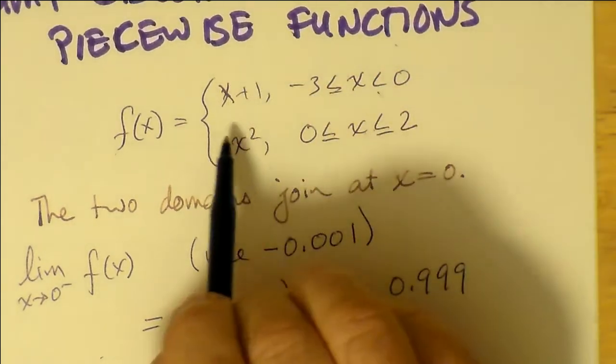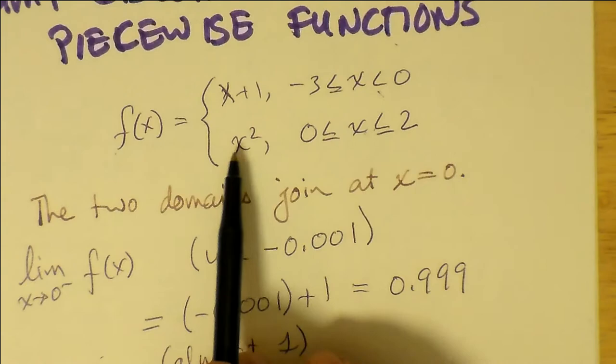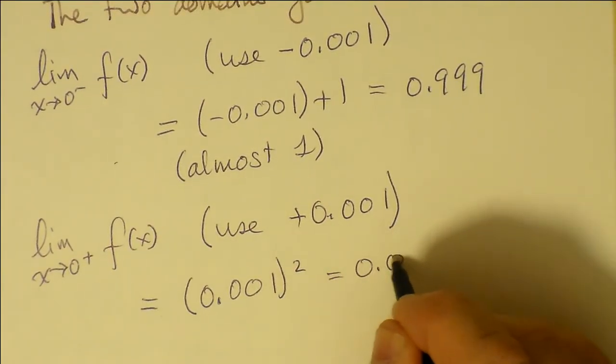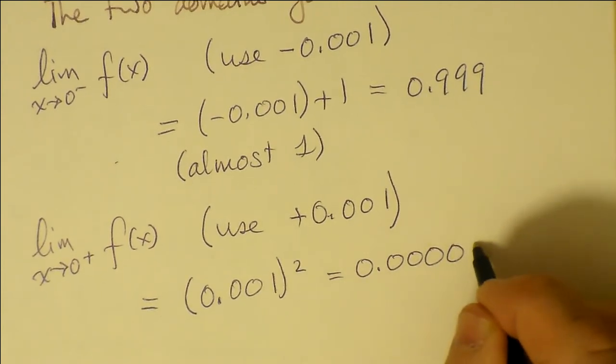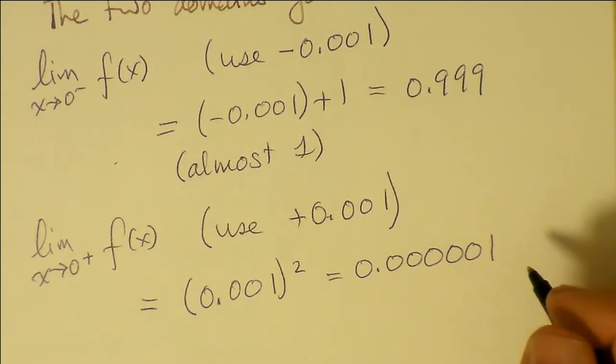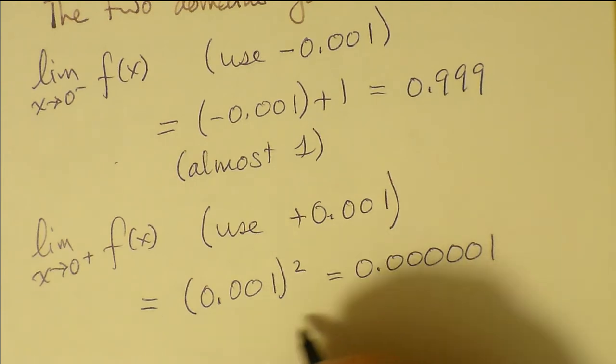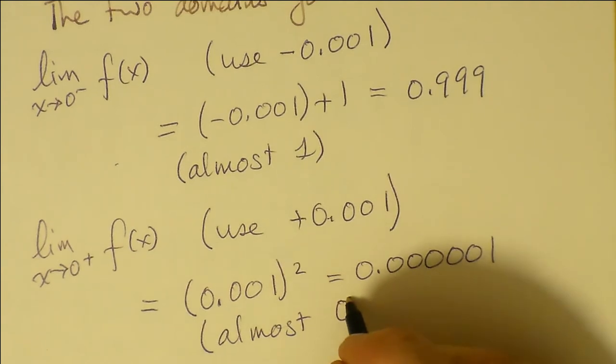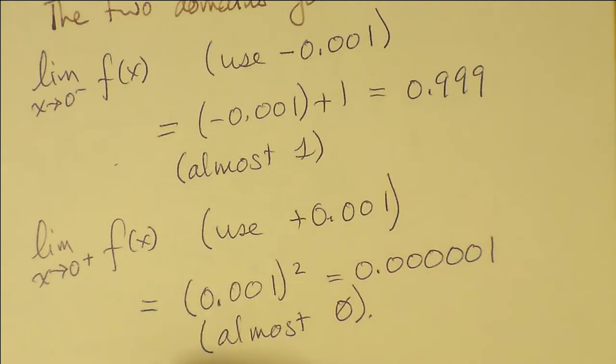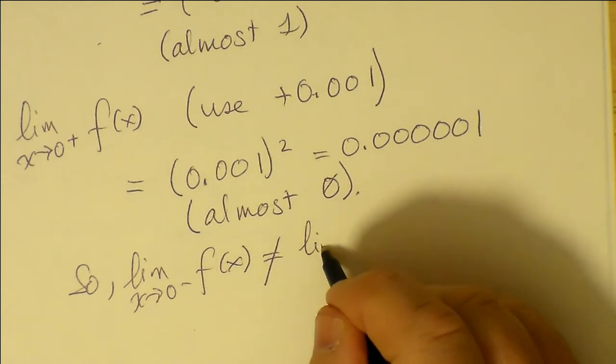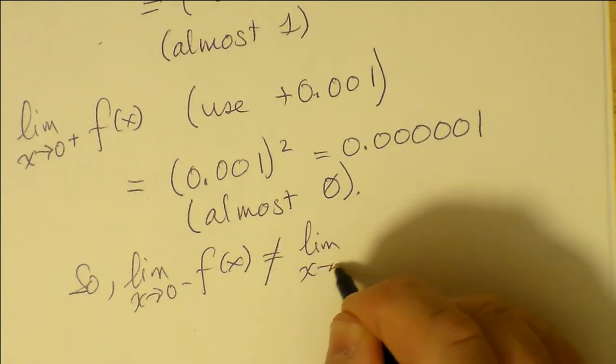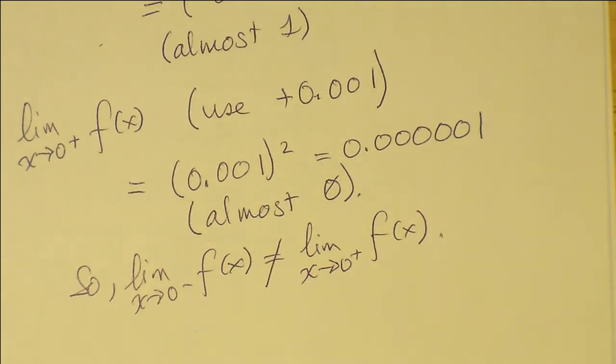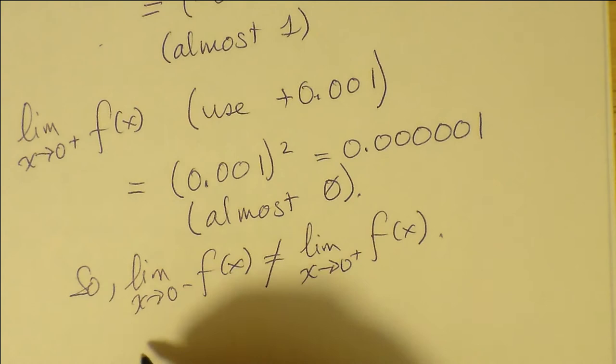As for the second part, if we approach 0 from the right, we have to apply the function x squared, because we're in the domain 0 to 2, and that domain includes 0. And so we end up squaring 0.001. Now 0.001 is 10 to the minus 3. We end up with a number 10 to the minus 6. Well, you can see that that's almost 0, and clearly a number that's almost 1 is not really equal to a number that's almost 0. So we say that they're not equal.